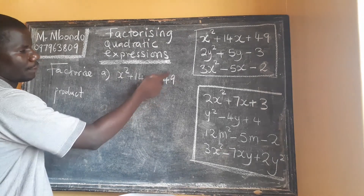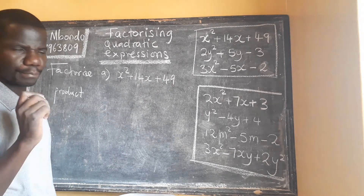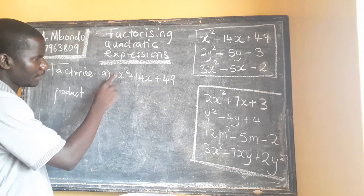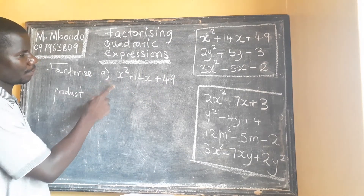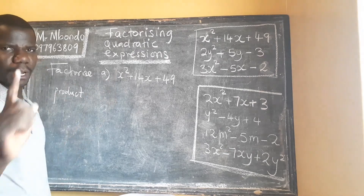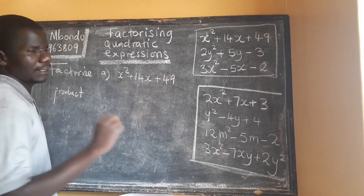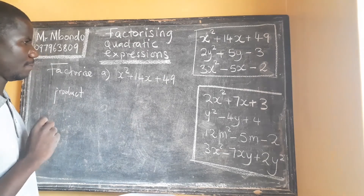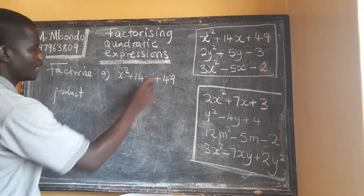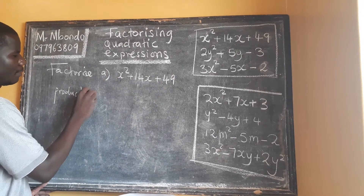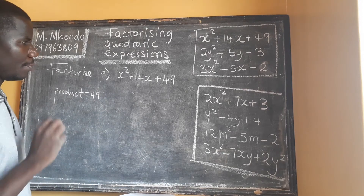The coefficient of x squared multiplied by the constant — that is what gives us the product. In this case our coefficient is 1, so this has to be multiplied by 49. When you multiply 1 by 49 you get 49. So 49 is our product.